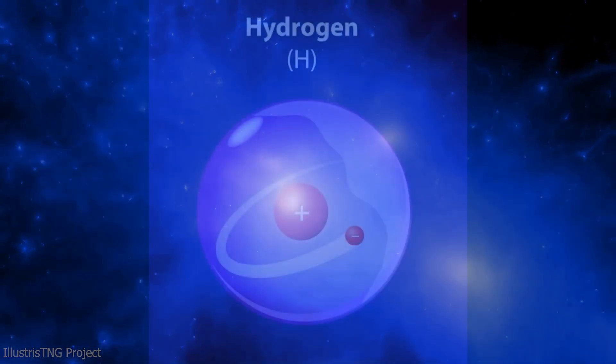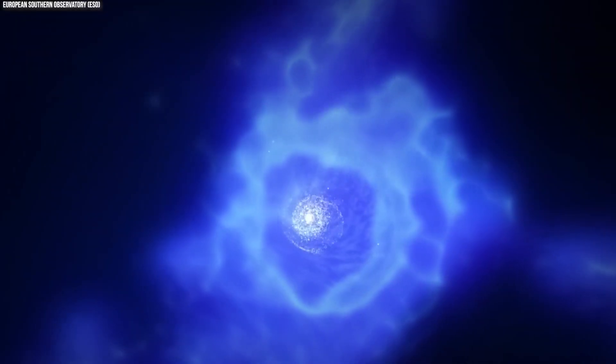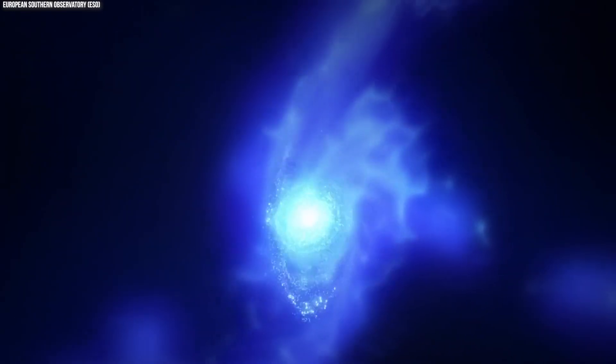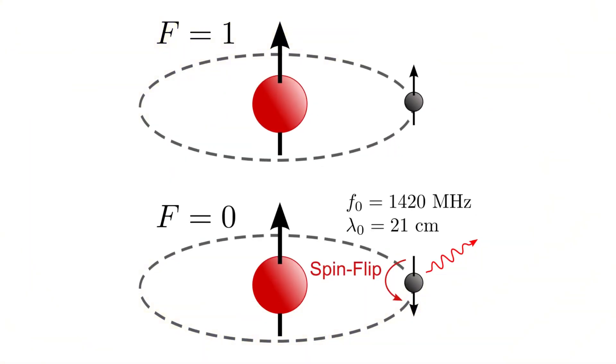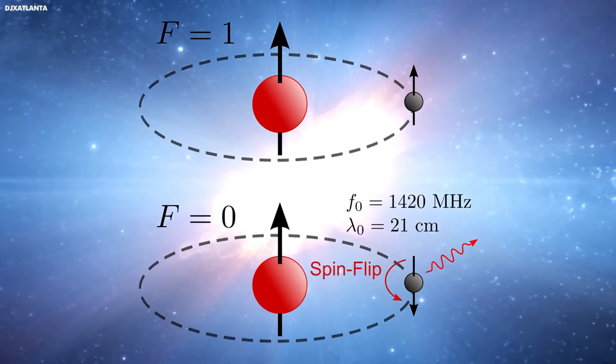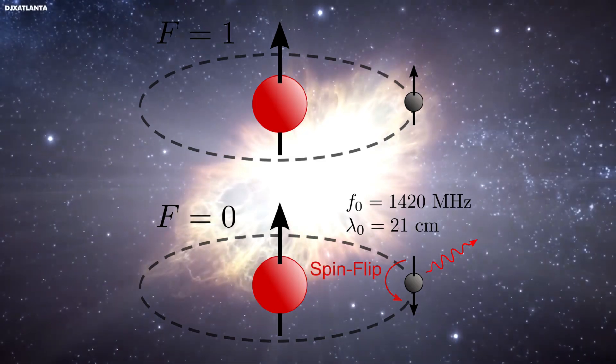In the midst of this cosmic dance, hydrogen played a vital role. Hydrogen is the simplest and most abundant element in the universe, and during the cosmic dark ages, it was the main actor on the stage. Hydrogen atoms, made of one proton and one electron, can have their spins aligned or opposite. When the spins flip, the atom emits a photon of light at a specific wavelength, known as the 21 centimeter line.